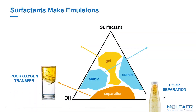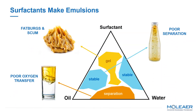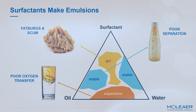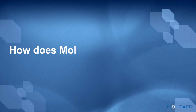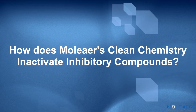Surfactants emulsify the fats, oils, and grease, making them extremely difficult to remove with traditional oil-water separation techniques. Increased concentrations of surfactants create stable emulsions and fatbergs. Until now, there has not been a chemical-free solution to removing these inhibitory compounds from wastewater.